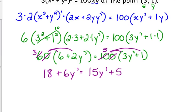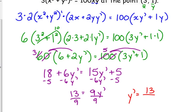And we're just solving for y prime. Minus 6y prime, minus 5. So we've got 13 is equal to 9y prime. 15 minus 6, yep. And then divide by 9. So the slope of the graph at the point (3, 1) is 13 over 9.